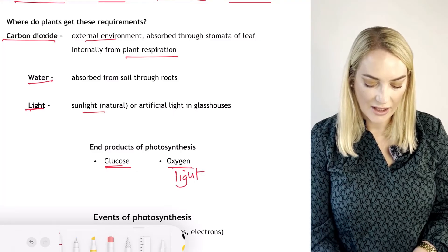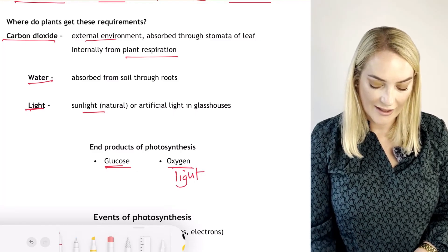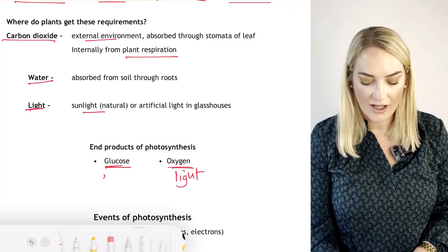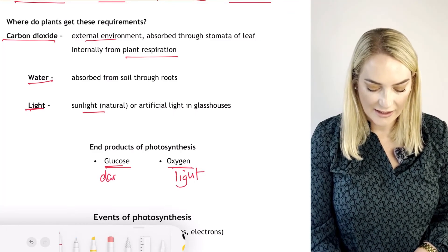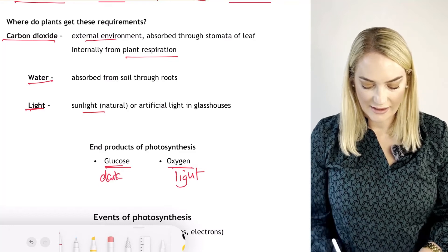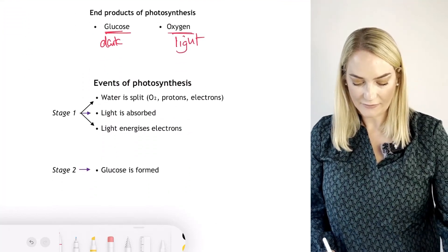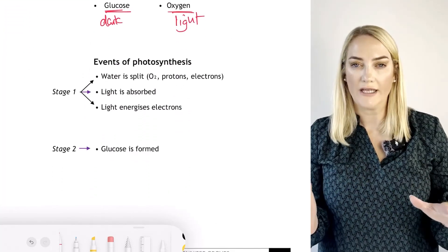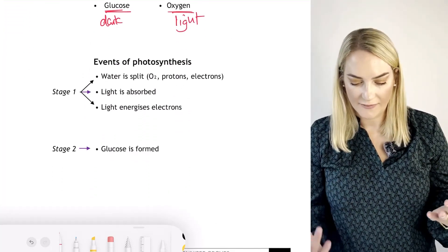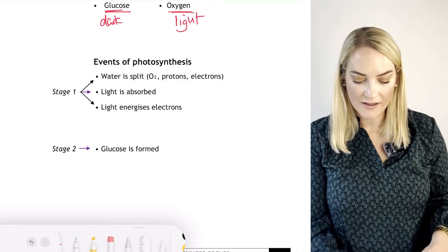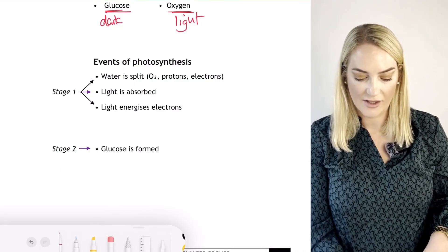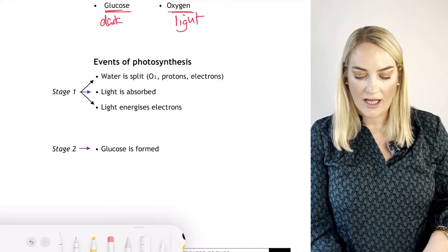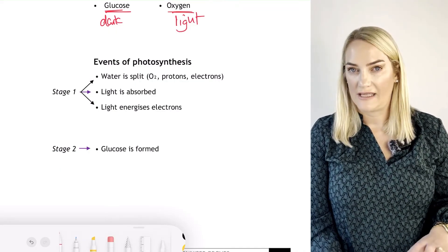Our main products of photosynthesis are glucose and oxygen. Oxygen is made in the light stage, and glucose is made in the dark stage.